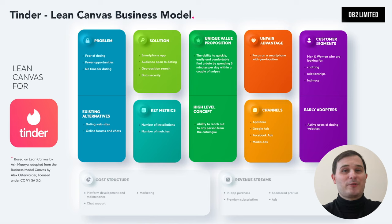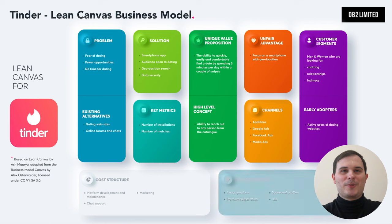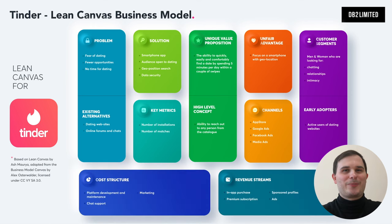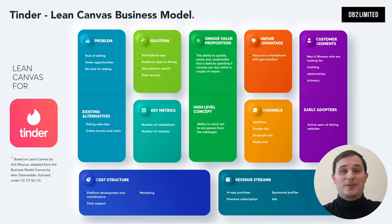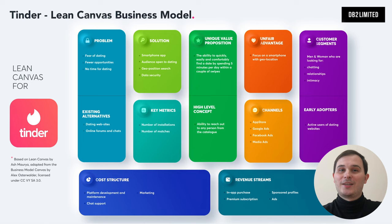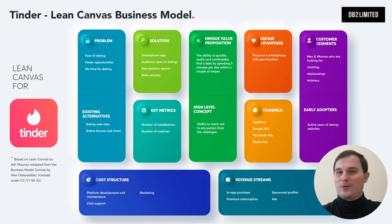Tinder's revenue model is primarily subscription-based with a premium version. This allows paid users to give out more likes, use it in anonymous mode, find matches worldwide, see who viewed their profile, boost their own profile, and much more.